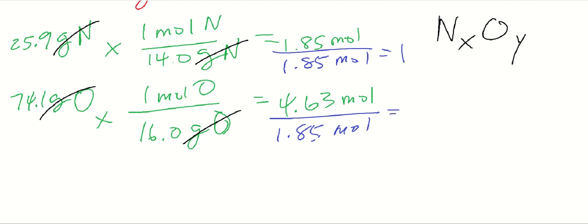4.63 divided by 1.85 is 2.5. That's not what we want - we didn't get whole numbers. So we'll have to multiply through by 2 to get whole numbers.